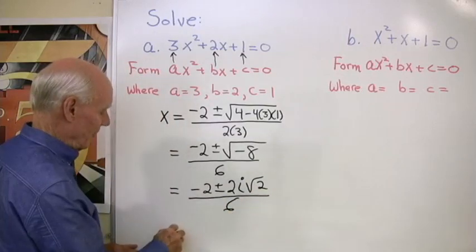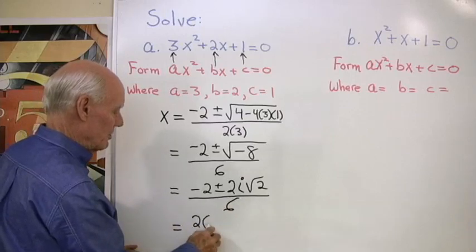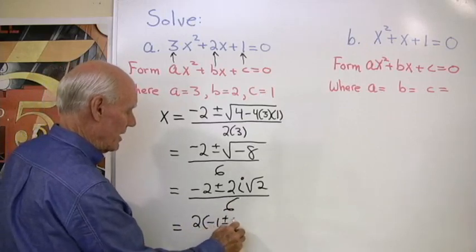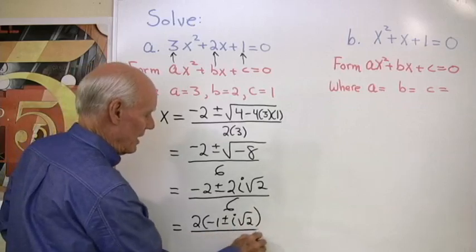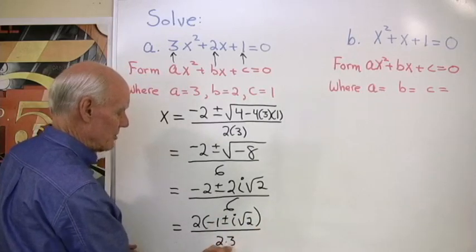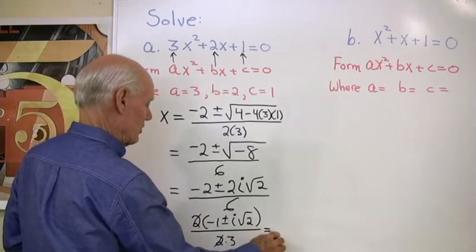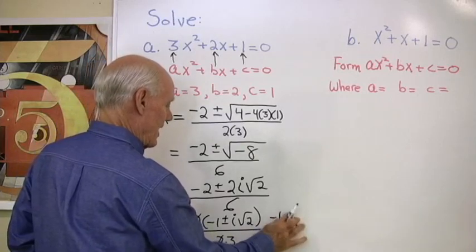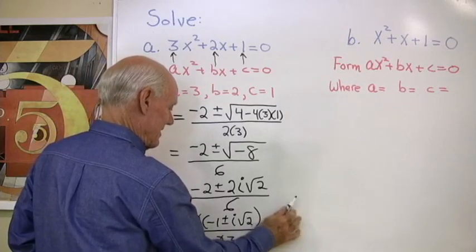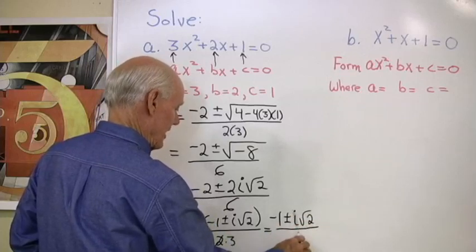And then I can simplify even further by factoring a 2 out of the numerator. 2 times negative 1 plus or minus i square root of 2, and I'll factor a 2 out of the denominator, 2 times 3. Those factors divide out, and so I have two solutions. Negative 1 plus or minus i square root of 2, all divided by 3.